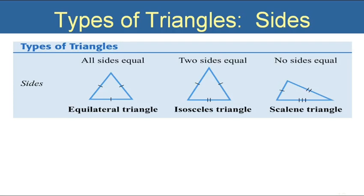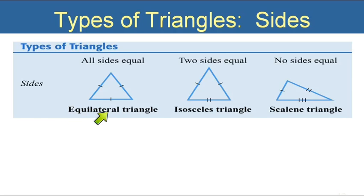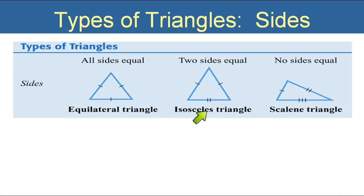If we classify by sides: if all three sides are equal, it's equilateral — 'lateral' means sides, so equilateral means equal sides. If only two sides are equal and the third is different, it's isosceles. If all three sides are different, it's scalene.